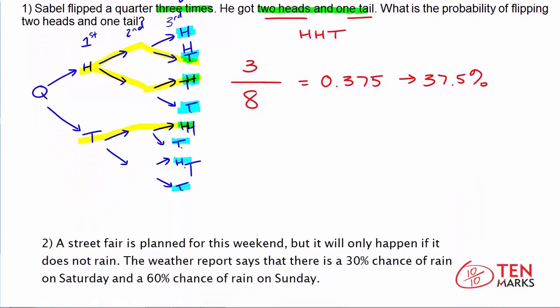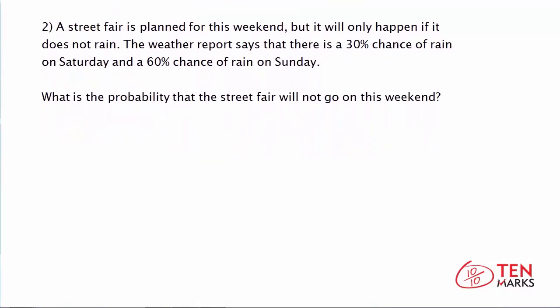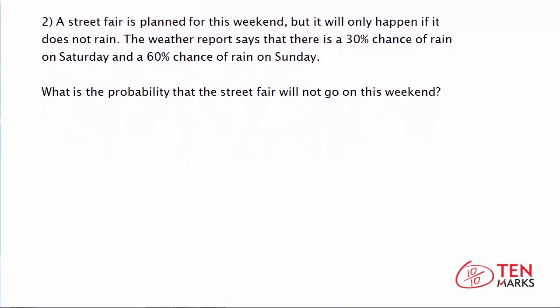Let's try another problem. A street fair is planned for this weekend, but it will only happen if it does not rain. The weather report says there is a 30% chance of rain on Saturday and a 60% chance of rain on Sunday. What is the probability that the street fair will not go on this weekend? We're looking for the street fair not going on — and that happens if it rains, because it's only going to happen if it does not rain. This is a compound event because we need to think about the likelihood that it rains on both Saturday and Sunday.